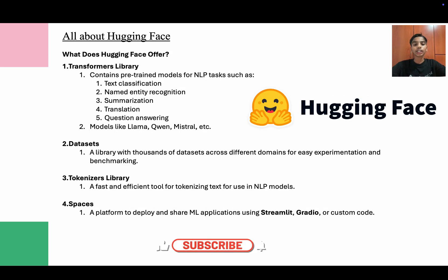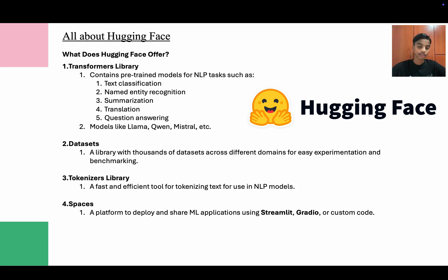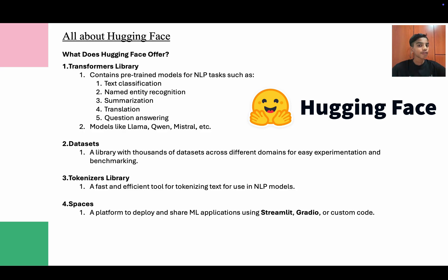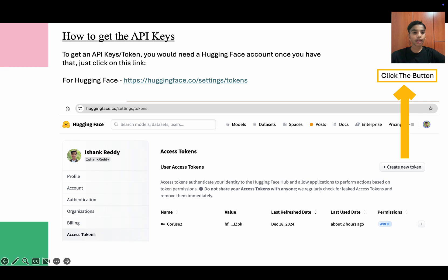What does Hugging Face offer? It offers the Transformers library containing pre-trained models for NLP tasks such as text classification, named entity recognition, summarization, translation, and Q&A. Some models in the library include LLaMA, Qwen, Mistral, and DeepSeek. There are also datasets — thousands of datasets across different domains for experimentation and benchmarking — plus the Tokenizers library for fast text tokenization, and Spaces, a platform to develop and share applications using Streamlit, Gradio, or custom code.